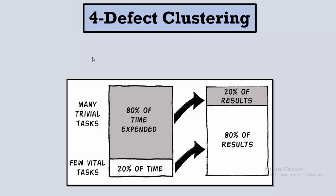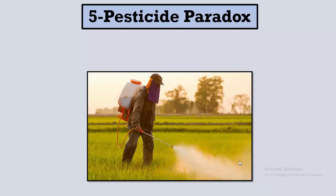A good tester knows which part of the software deserves the most time and effort. If you spend your effort on the broad 80 percent, you will only find 20 percent of the bugs. So if you have time pressure and can't test everything, you should focus on the parts of the software that will yield 80 percent of the results — that's defect clustering.